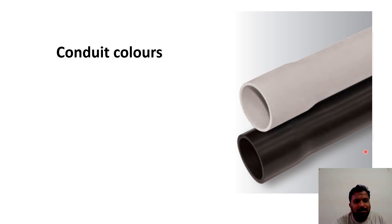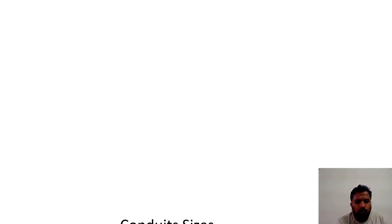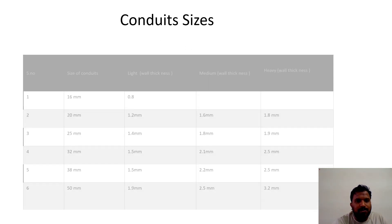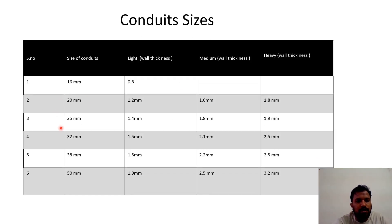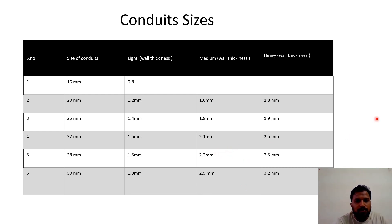Conduit colors can be black, gray, and sometimes white as well. So mostly there are three colors: black, gray, and white. Now, conduit sizes range from 16 mm, 20 mm, 25 mm, 32 mm, 38 mm, and 50 mm. Mostly, these conduits are embedded either in block walls or inside the slabs. These are the conduit sizes.